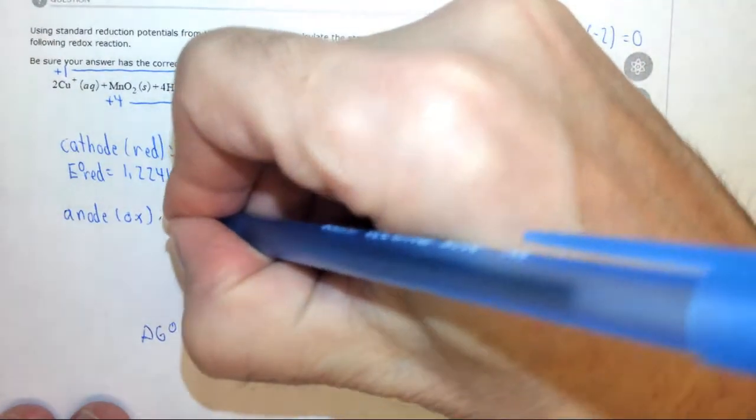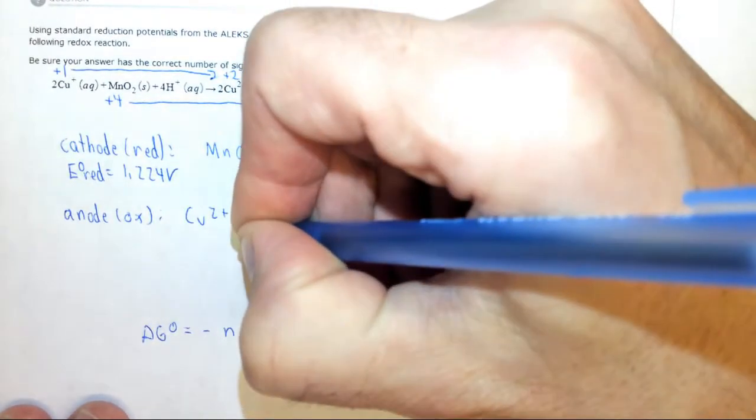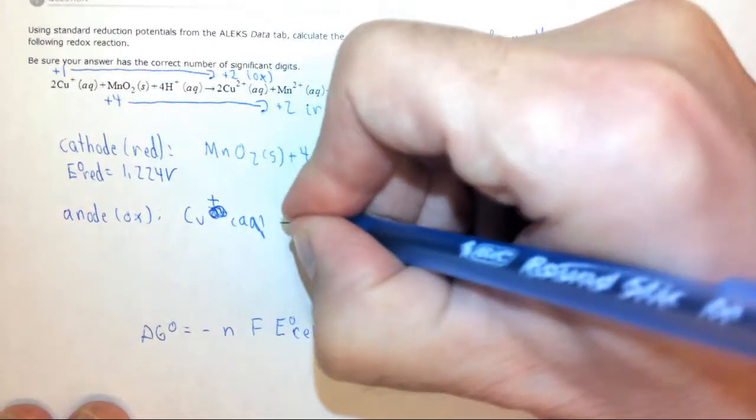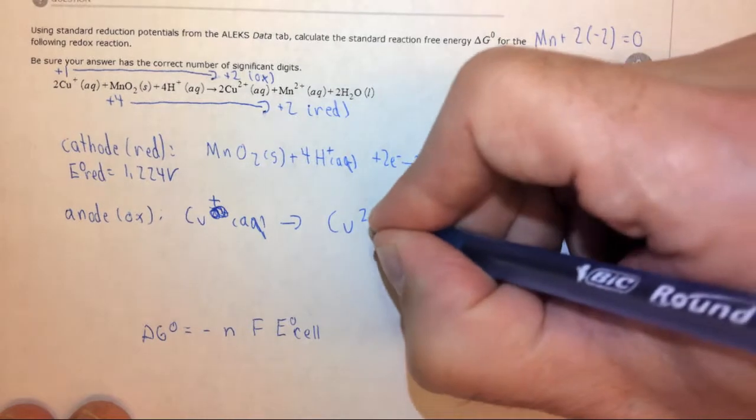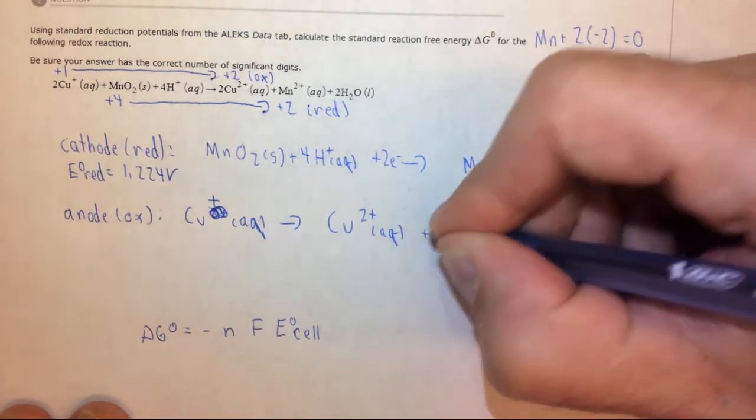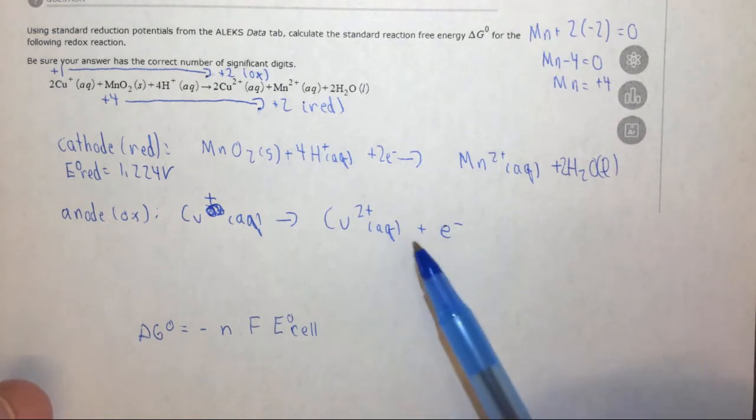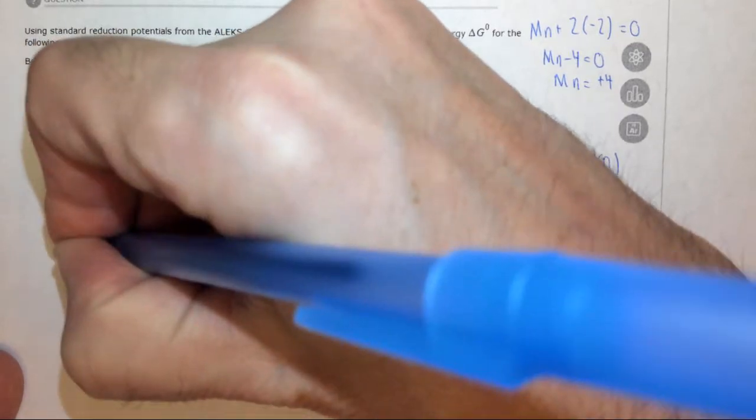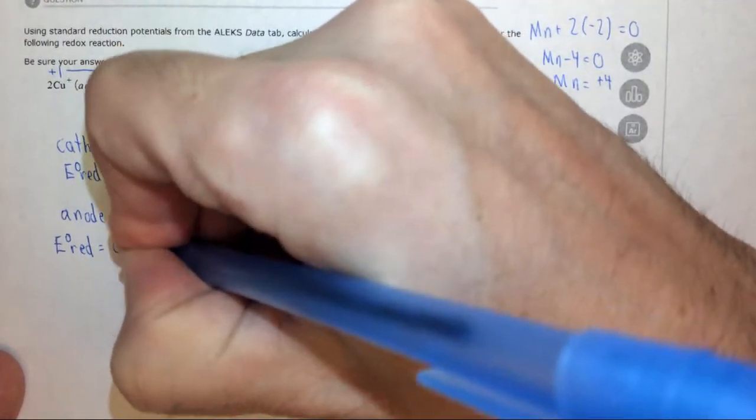In this case we have Cu+ aqueous forms Cu2+ aqueous, and it must have lost an electron. So this is what's occurring at this end of the reaction. And here the standard reduction potential is equal to 0.153 volts.